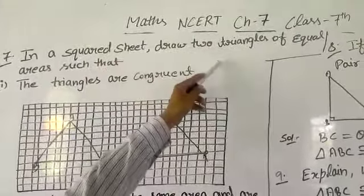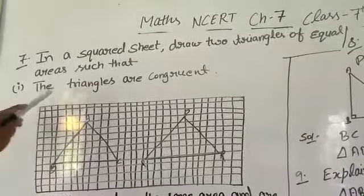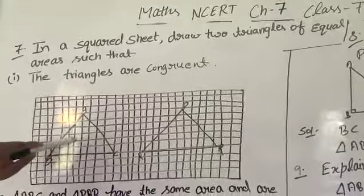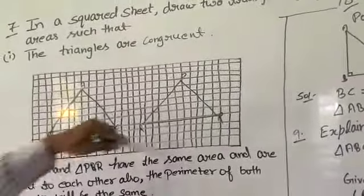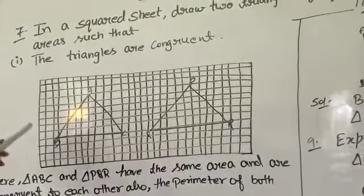Question 7: In a squared sheet, draw two triangles of equal area such that the triangles are congruent. So this is the square sheet and you have to paste graph paper, you can use graph paper also.